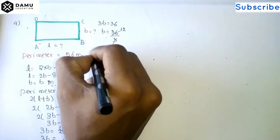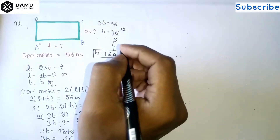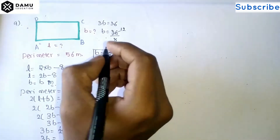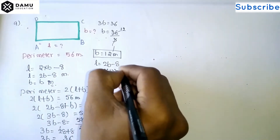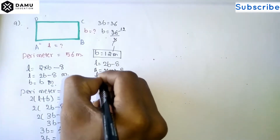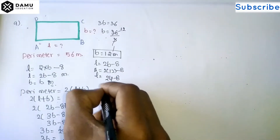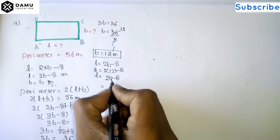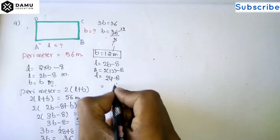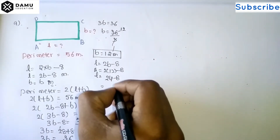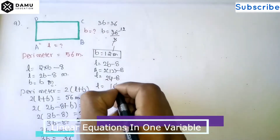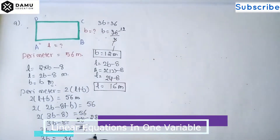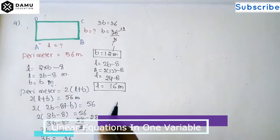So breadth b = 12 meters. Now length = 2b - 8 = 2 into 12 minus 8 = 24 - 8 = 16 meters. So length will be 16 meters and breadth will be 12 meters.